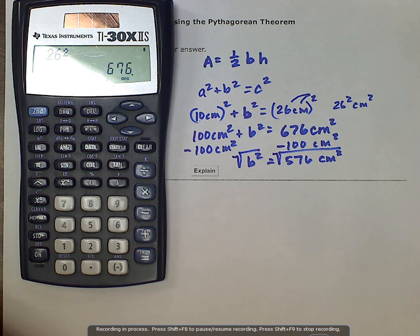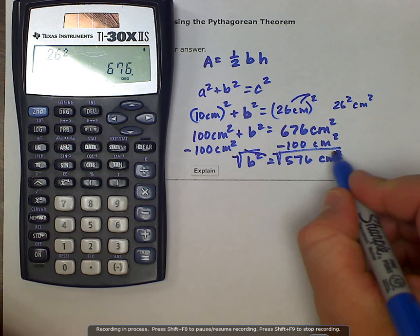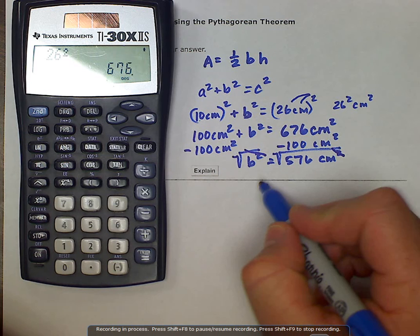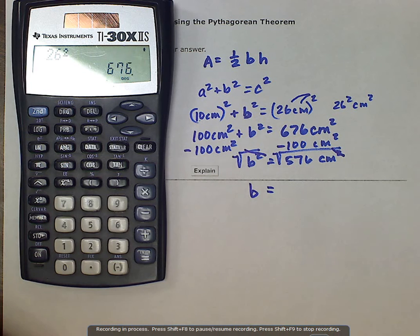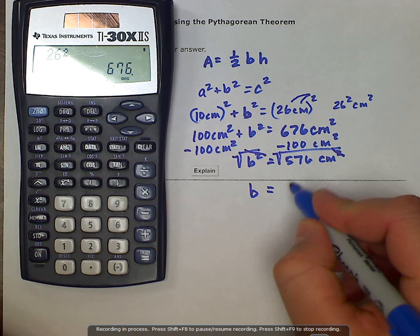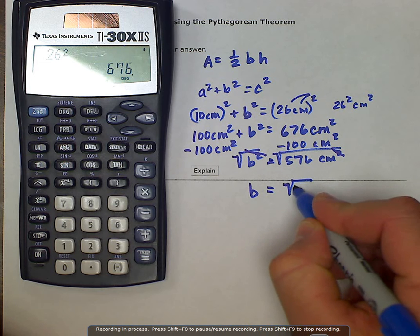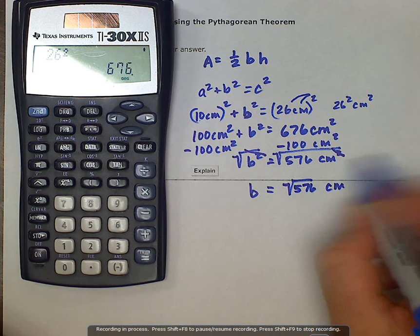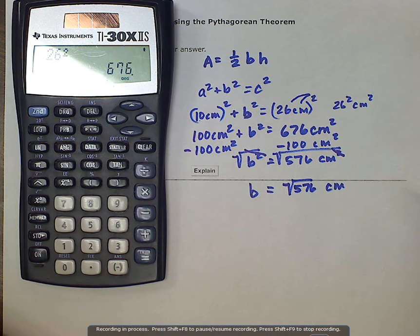Well, the square root's going to cancel our powers there. And we're going to be left with b is equal to the square root of 576. And our centimeters squared cancel, and we're just left with centimeters.